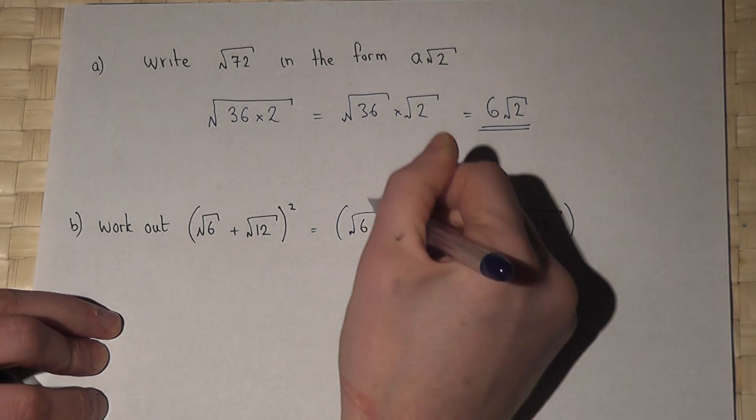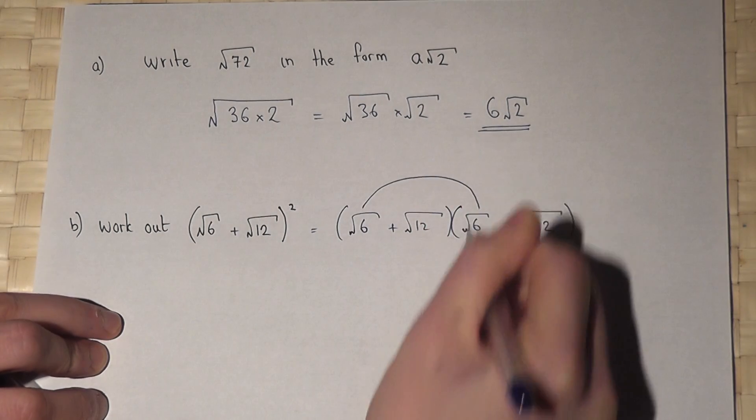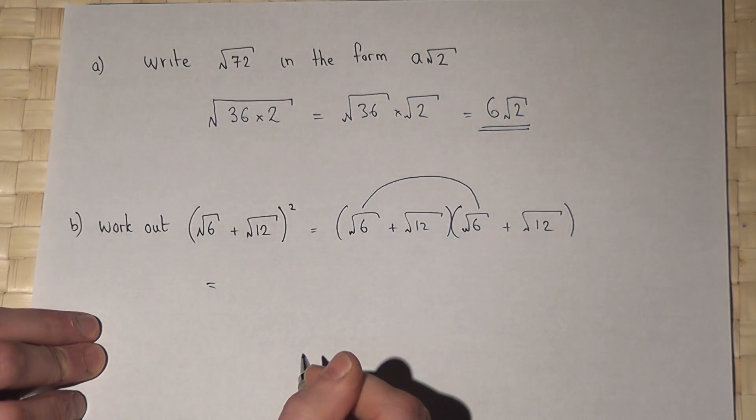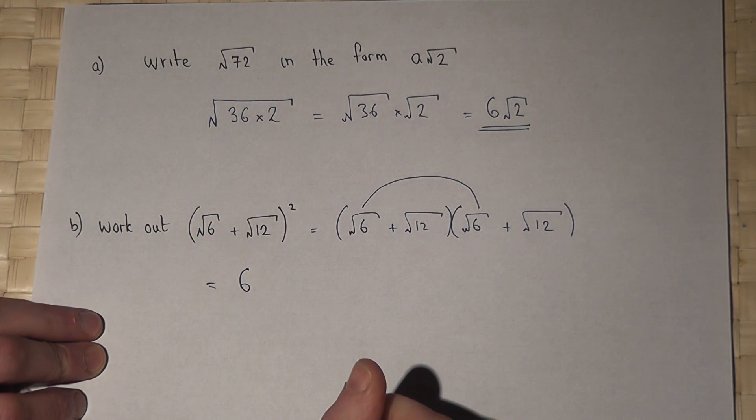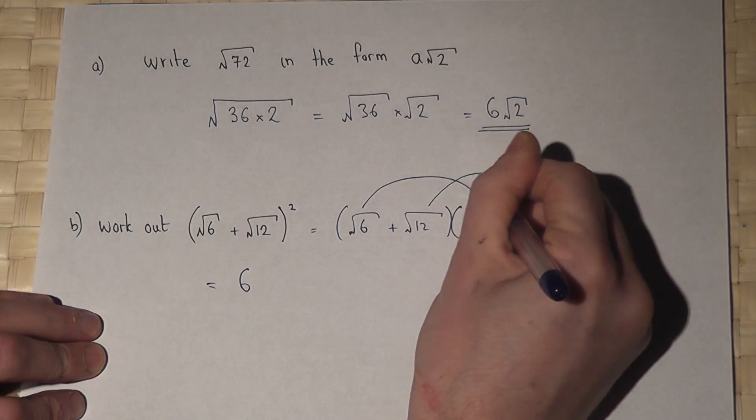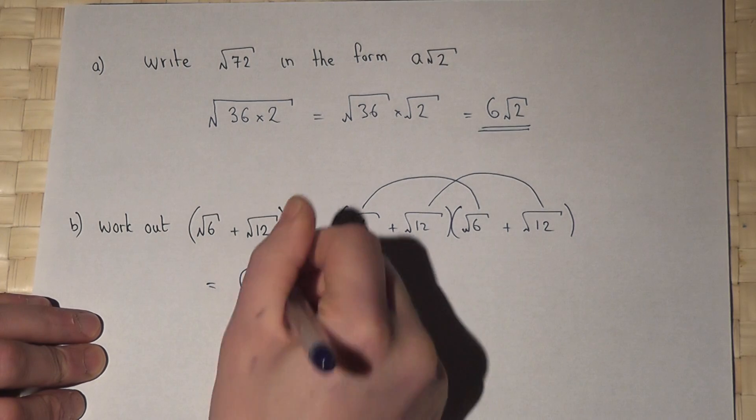Right then, root 6 times root 6 just equals root of 36, which is just 6. Similarly, root 12 times root 12 is just 12.